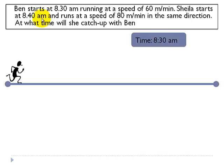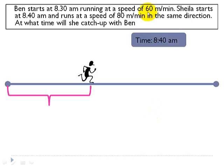Now let's see what happens within this 10 minutes. After 10 minutes, now the time is 8:40 am, Ben would have run some distance. What do you think is the distance Ben would have run? 60 meters per minute. In 1 minute, he runs 60 meters. So in 10 minutes, he would have run 60 times 10, 600 meters.